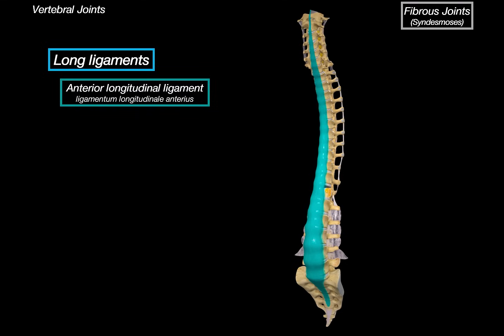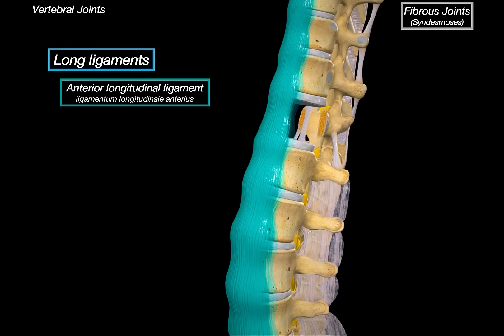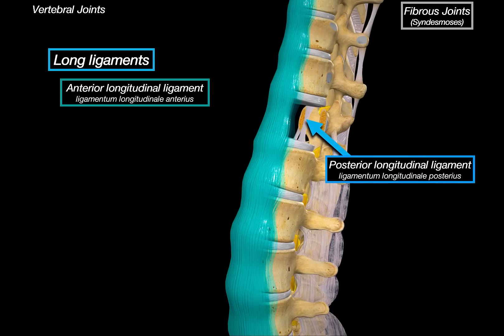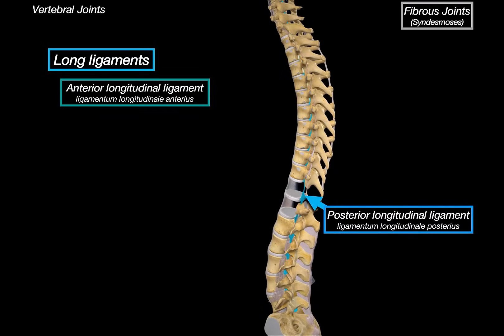If we zoom in and remove the body of one vertebra, we can see the posterior longitudinal ligament. It runs along the posterior surfaces of the vertebral bodies inside the vertebral canal, just in front of the spinal cord, along the whole spine. Its function is to limit hyperflexion — preventing excessive bending forward — and it also supports the intervertebral discs.